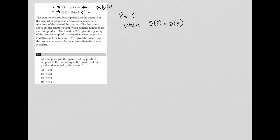Let's do the math on that. So S of P is just one half P plus 40. This is equal to D of P, which is 220 minus P.